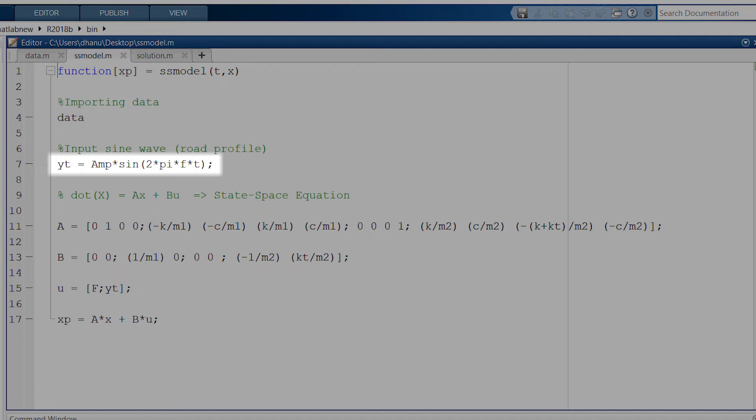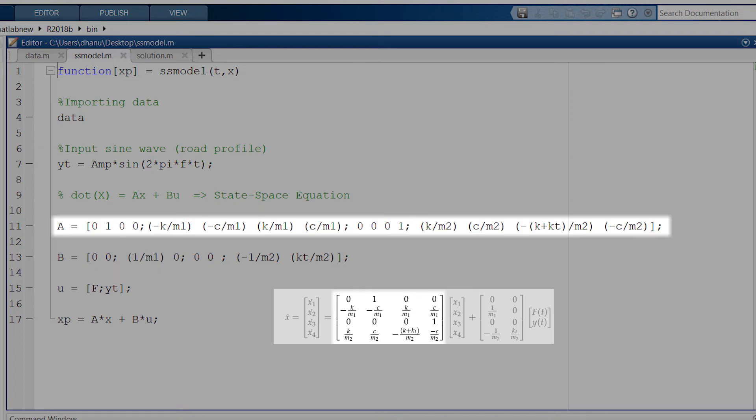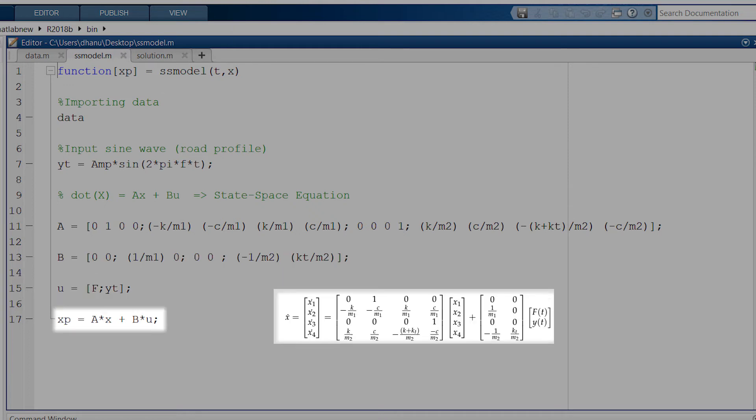Then I have defined each of these matrices separately. A is this matrix, B is this matrix, U is this matrix. Then we can set our output matrix of the function to be equal to this linear combination of above defined matrices. This is our state space model defined in MATLAB.